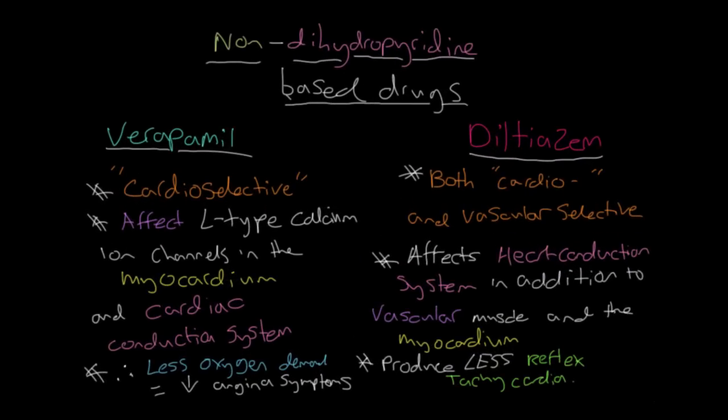So this is where our non-dihydropyridine calcium channel blockers are better in the treatment of angina. For example, verapamil is relatively more selective for the L-type ion channels in the heart. I will mention though, as is always the case with drug prescription, that at higher doses, the ion channels in smooth muscle are also frequently stimulated.